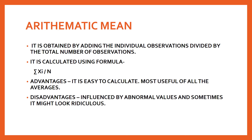The disadvantage of the arithmetic mean is that it is influenced by abnormal values. If among 10 people one person has an abnormal value, it can influence the mean. Sometimes it may also look ridiculous when calculating for a large group of people.